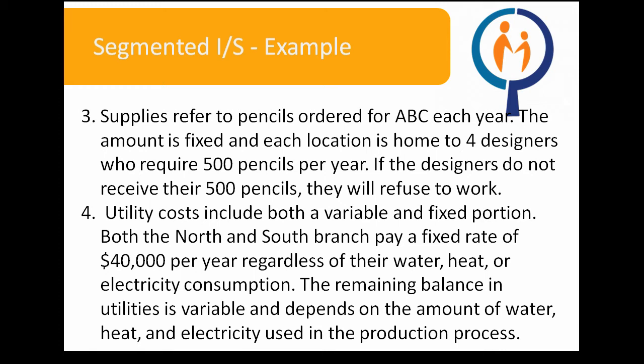4. Utility costs include both a variable and fixed portion. Both the North and South branch pay a fixed rate of $40,000 per year regardless of their water, heat, or electricity consumption. The remaining balance in utilities is variable and depends on the amount of water, heat, and electricity used in the production process.